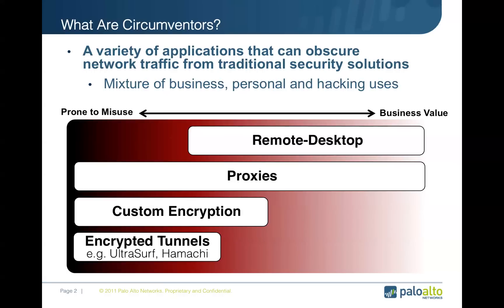You also see a lot of custom encryption. Sometimes applications or proprietary enterprise tools use their own type of encryption, but you also see this on the hacker side where bots and various things may use their own types of encryption to ensure security solutions can't inspect the payload. At the far end of the spectrum are purpose-built encrypted tunnels — your UltraSurf applications, your Hamachis — things built with the sole purpose of getting a user across a network security device. If you see these in your network, it's almost always a bad sign.